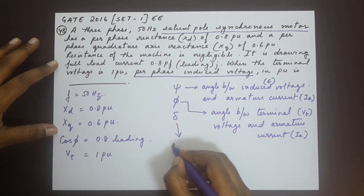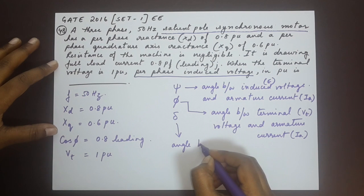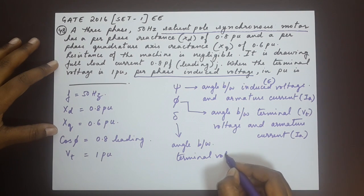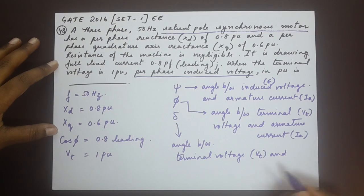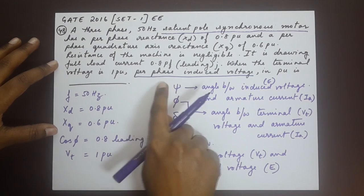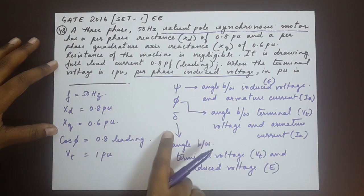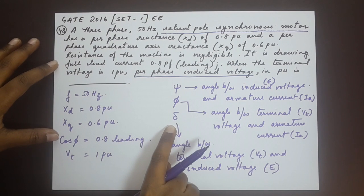While delta is the angle between terminal voltage Vt and the induced voltage E. In order to find the per phase induced voltage, we are going to come across all of these three types of angles. This will really help.